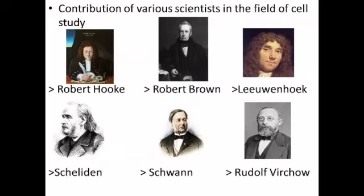Contributions of various scientists in the field of cell: Robert Hooke was the person who first discovered the cell in cork with the help of his primitive microscope. Leeuwenhoek, with the help of an improved microscope, discovered free-living cells in pond water. Robert Brown discovered the nucleus of the cell. Purkinje coined the term Protoplasm. Schleiden and Schwann gave the cell theory. Rudolf Virchow suggested that new cells arise from pre-existing cells by the process of cell division. Watson and Crick gave the DNA structure.